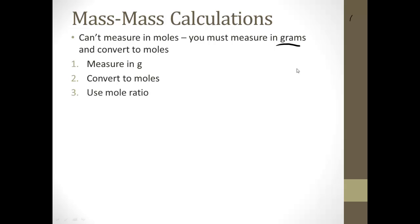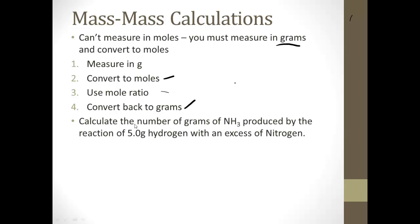Now, actually what I'm going to want you to do here is, I'm going to do the example, then I want you to back it up, look at this question again, and try it on your own. Same question, same numbers, that's okay, but this way you're at least practicing the steps on your own. So calculate the number of grams of NH3 produced by the reaction of 5 grams hydrogen with an excess of nitrogen. All this means is that we don't have to worry about the amount of nitrogen. We're just going to assume we have enough.